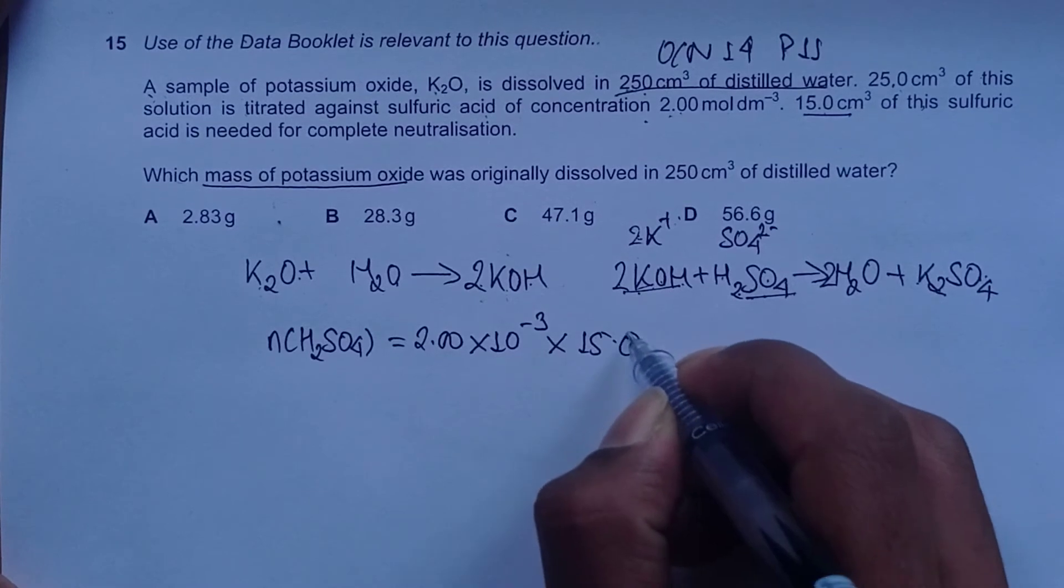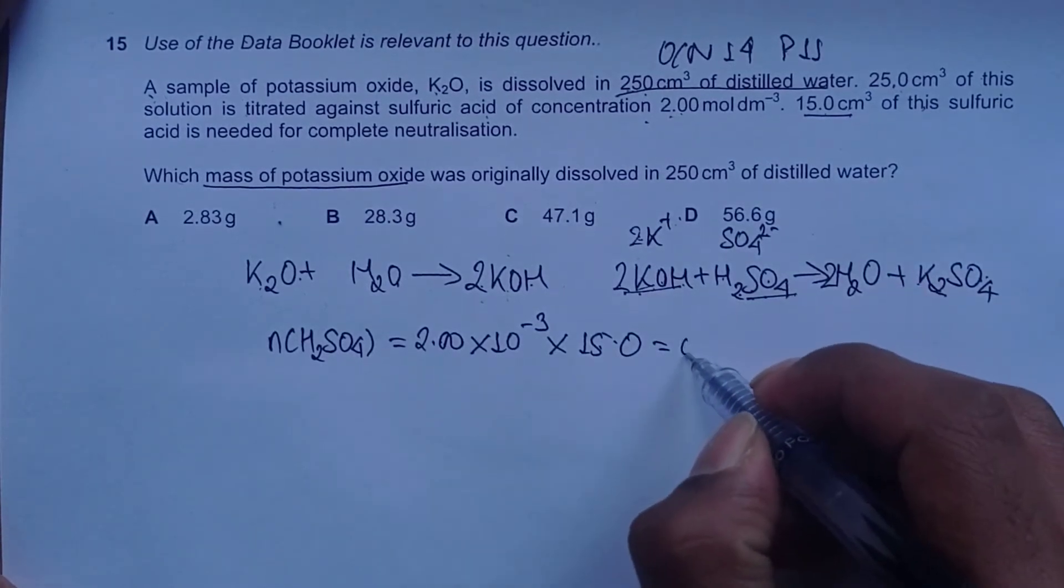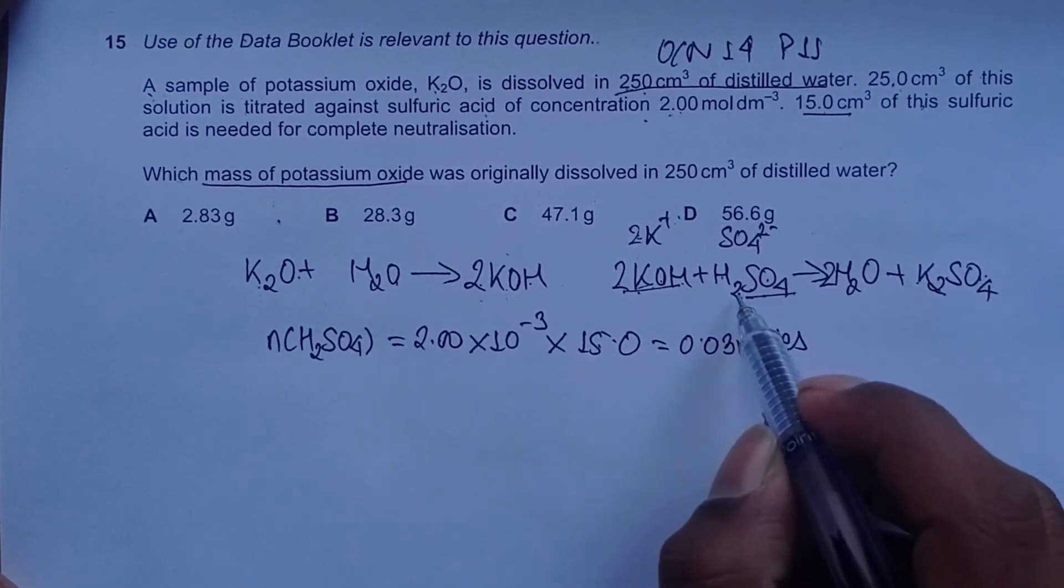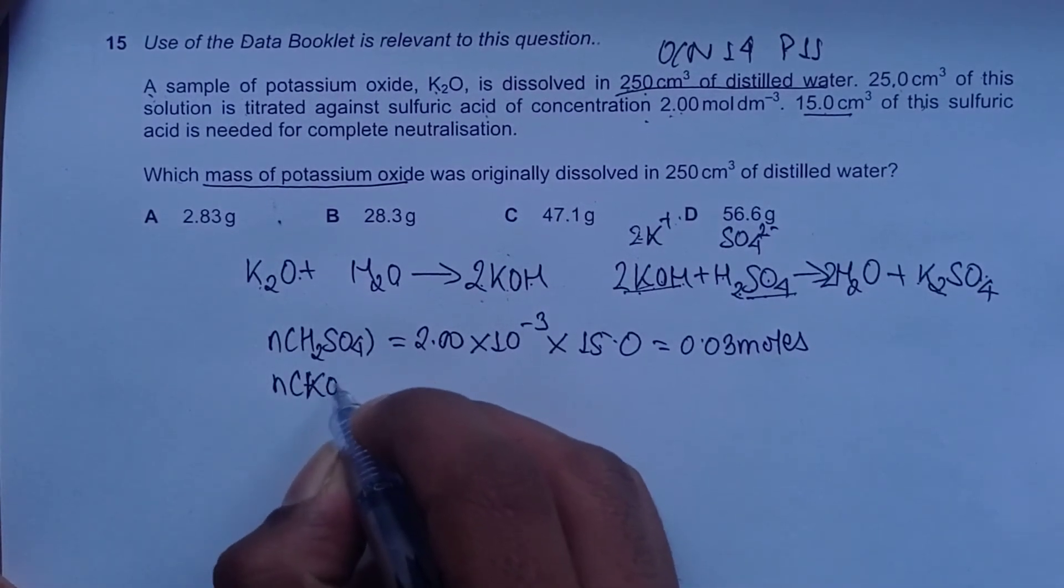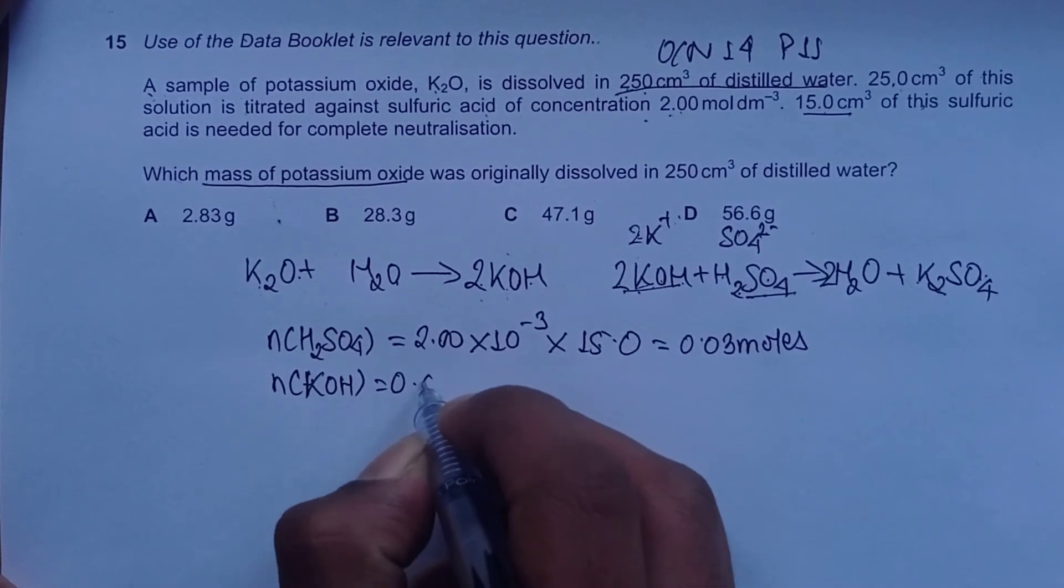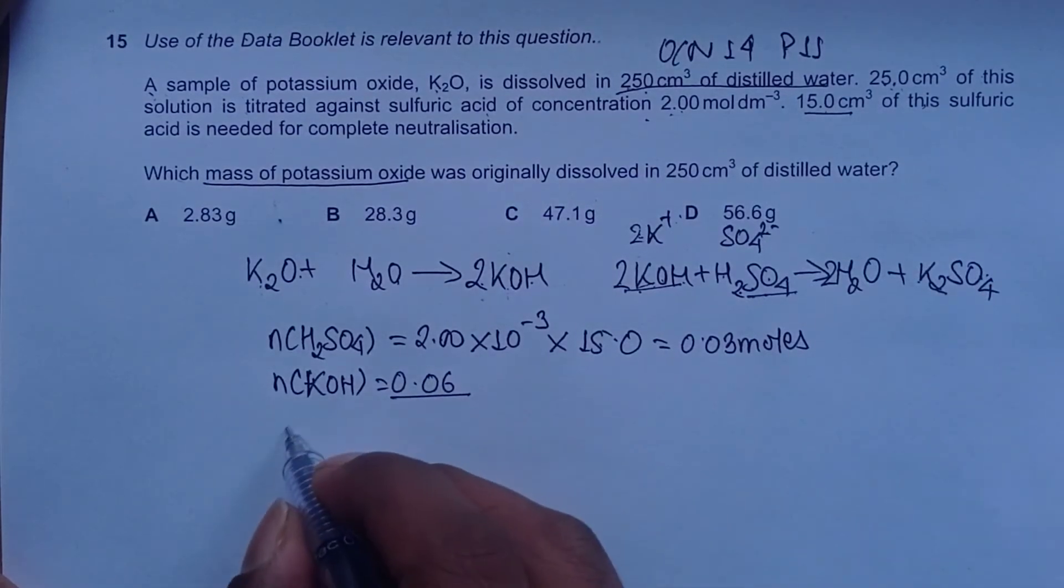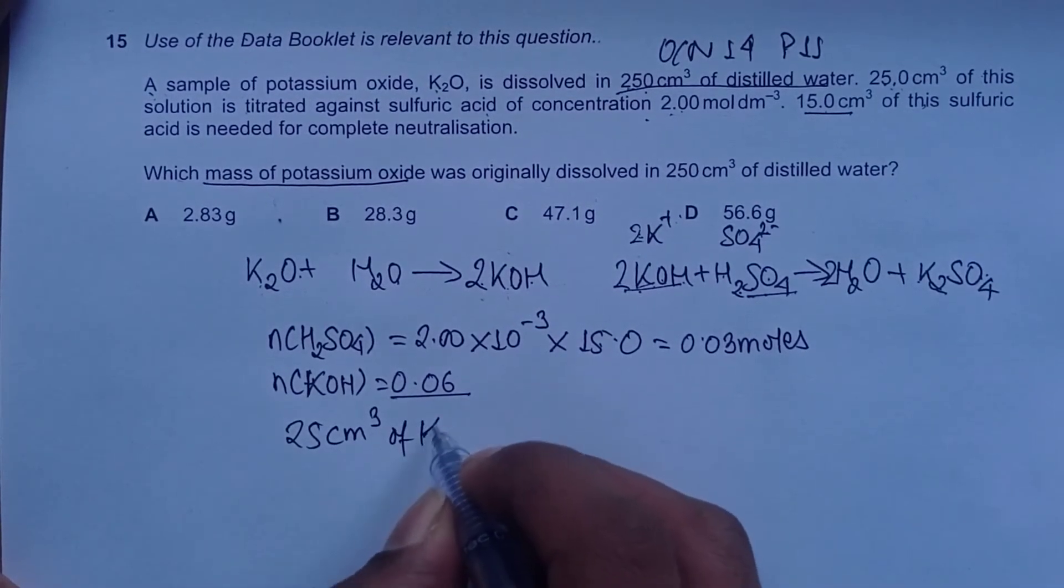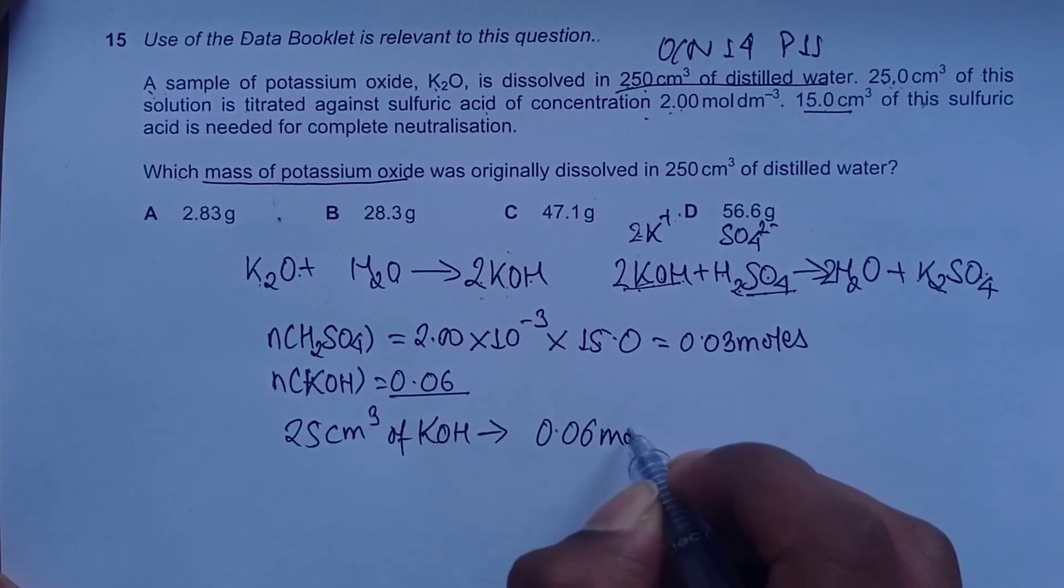This is 15 × 2 = 30, 30 ÷ 1000 = 3/100 = 0.03 moles. Moles of H2SO4 is 0.03. Using mole ratio, moles of KOH should be 0.06. Now this 0.06 is for 25 cm³ of KOH.